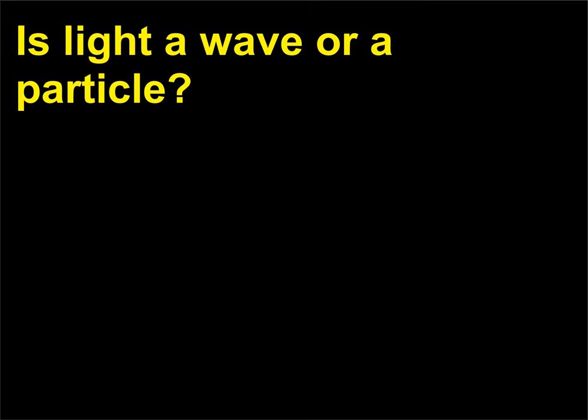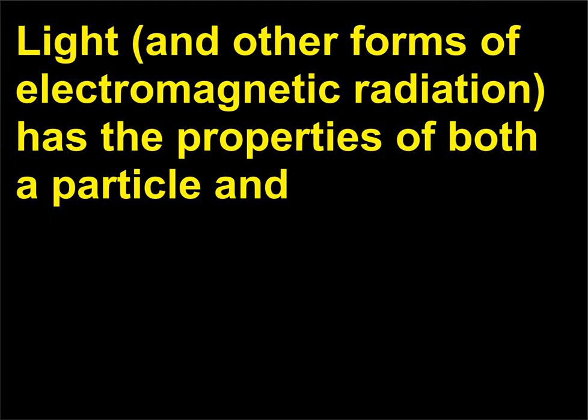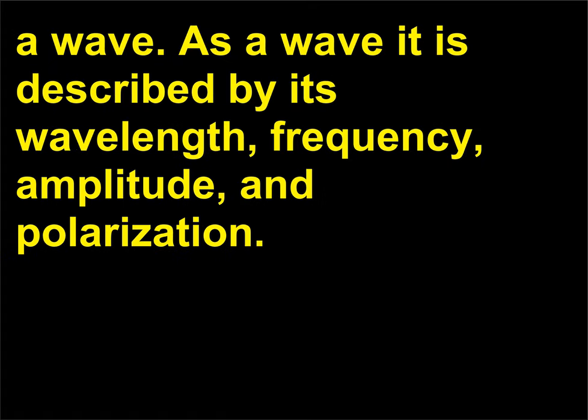Is light a wave or a particle? Light, and other forms of electromagnetic radiation, has the properties of both a particle and a wave. As a wave it is described by its wavelength, frequency, amplitude, and polarization.